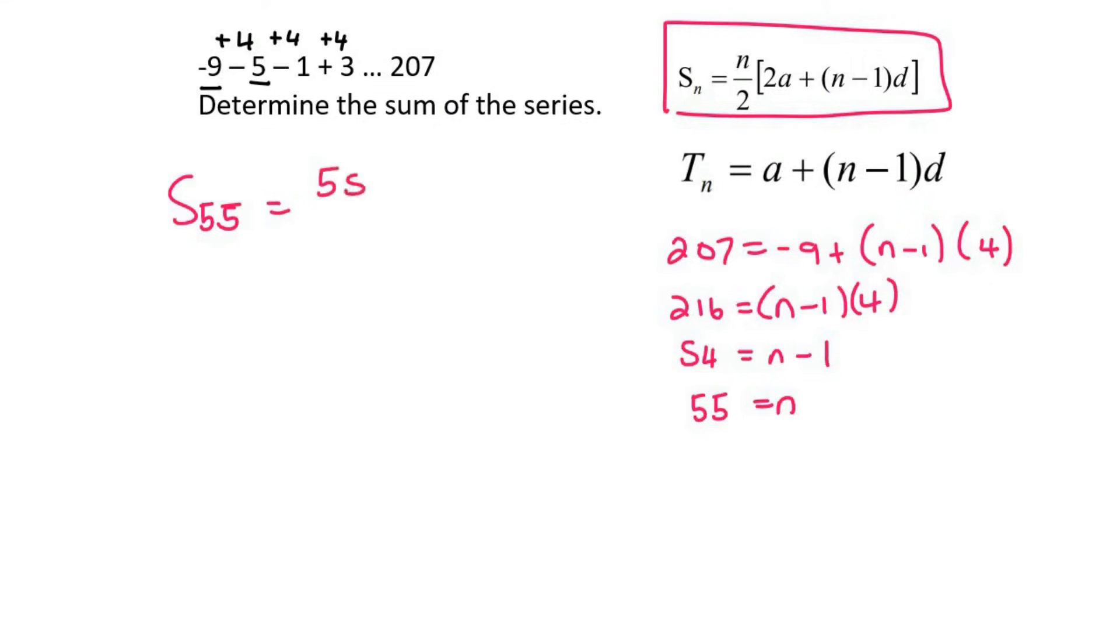And so that's going to be 55 over 2. A is minus 9 and the common difference is 4. And so the sum of 55 terms is going to be 5,445.